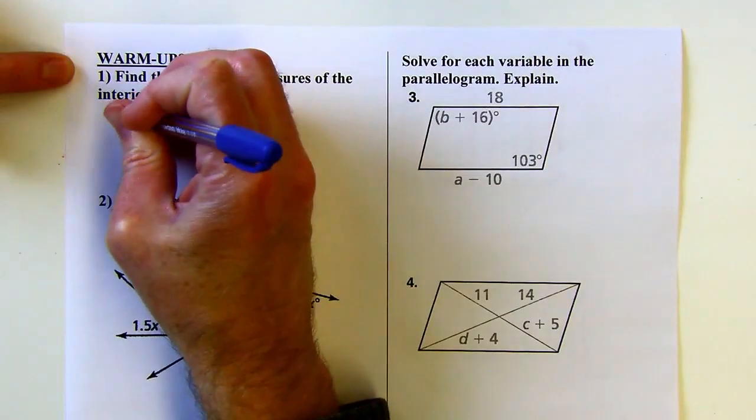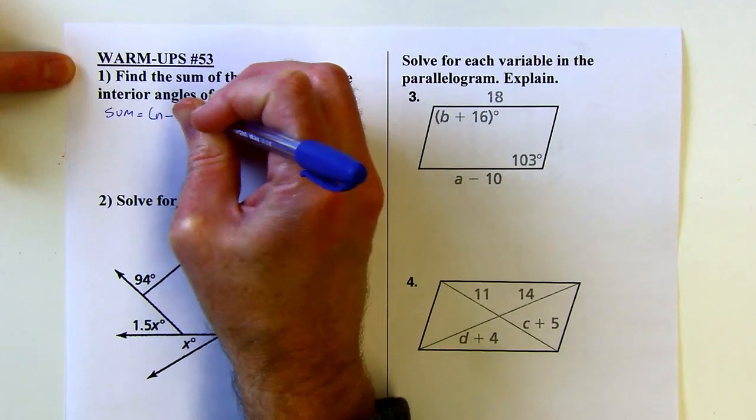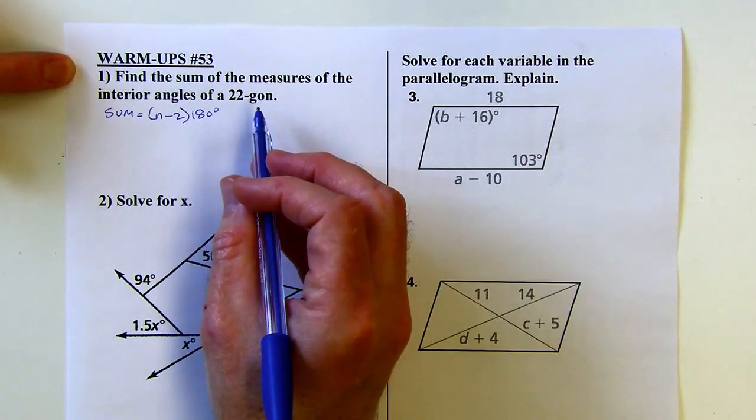So we've got our formula here. The sum is going to be n minus 2 times 180 degrees, n being the number of sides, in this case that's 22.